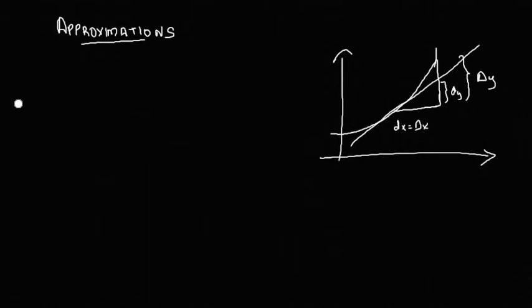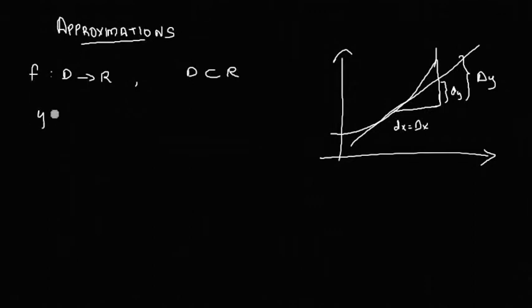We are going to consider the function f mapping D to R, where D is the set of real numbers. We assume y is equal to f of x, where f of x is the function whose approximate value we need to find.